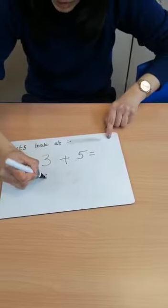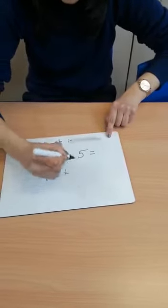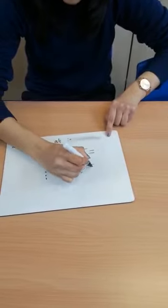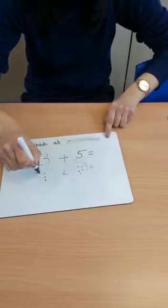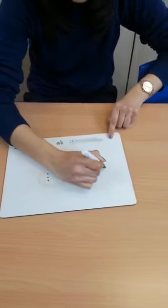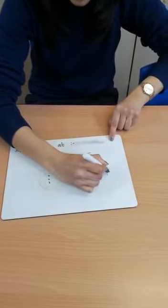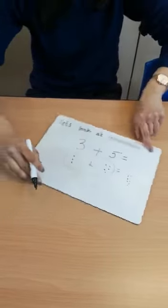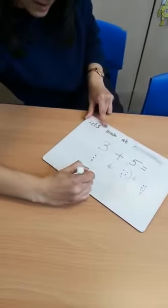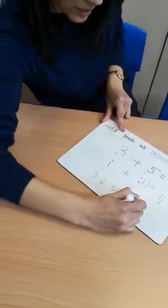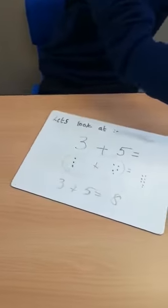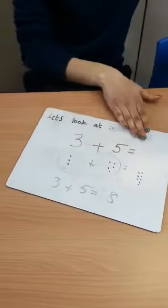Adding, so drawing three dots, add five dots equals. So you're going to put them together equals one, two, three, four, five, six, seven, eight. So three plus five equals eight. Or we can use a number line to show.